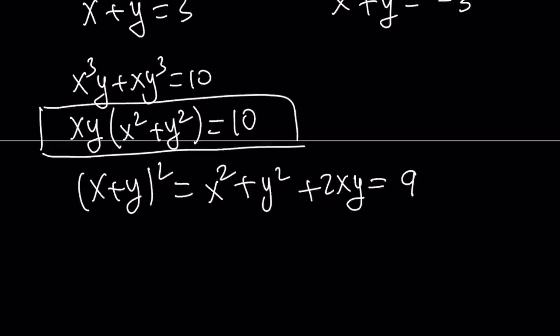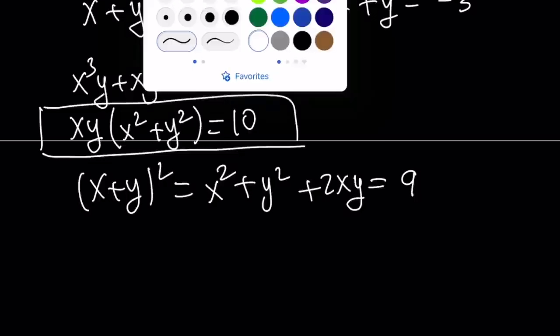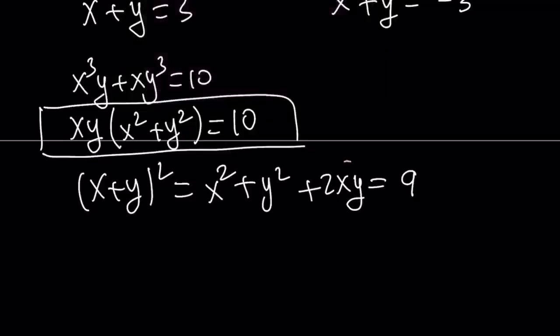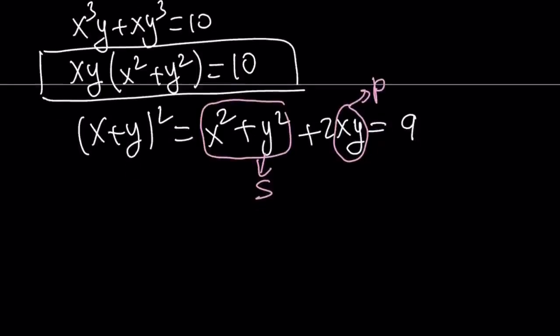So how am I going to use these together? Well, here's the thing I can do. I can kind of isolate. Let's use substitution here. So here, allow me to call this expression p for product, and let's call this s for sum of squares. It's a sum still. So we get from here s + 2p = 9. That's one equation.